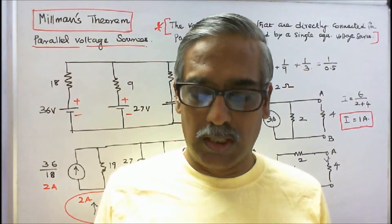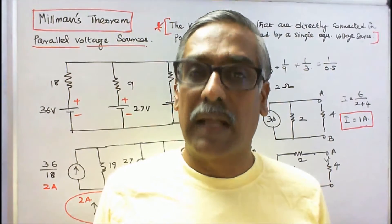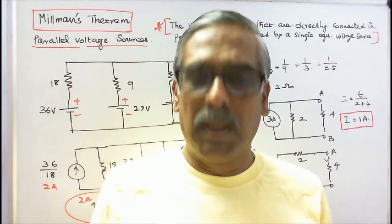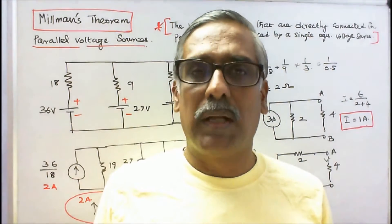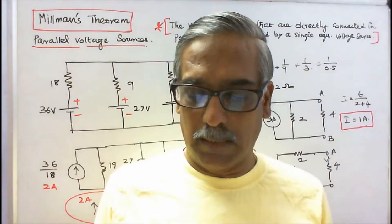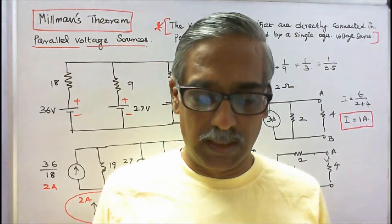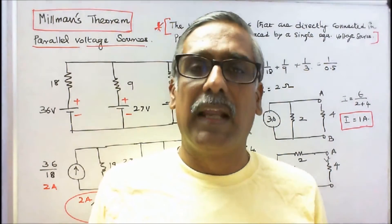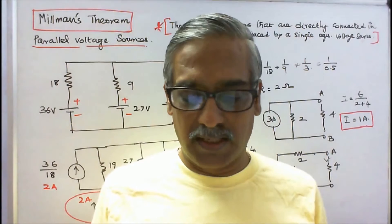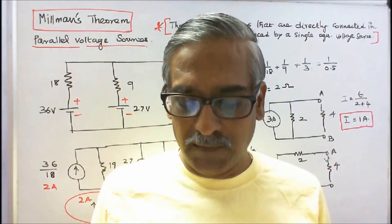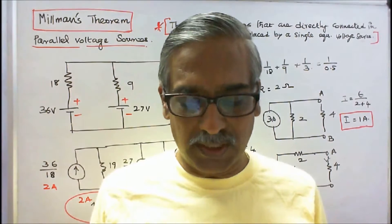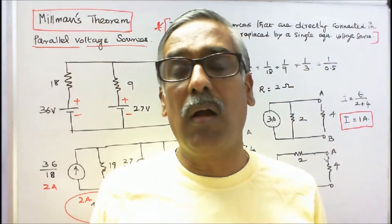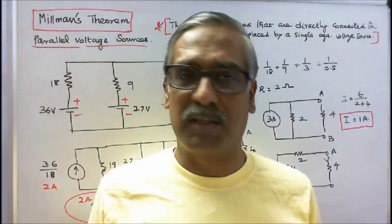He left this planet on May 22, 1991 in Florida, USA. Millman's Theorem, otherwise known as the parallel generator theorem, is named after him. He lived for 80 years and even today he lives in the form of his theorem in all electrical and electronic textbooks.